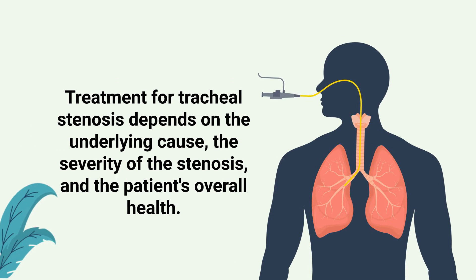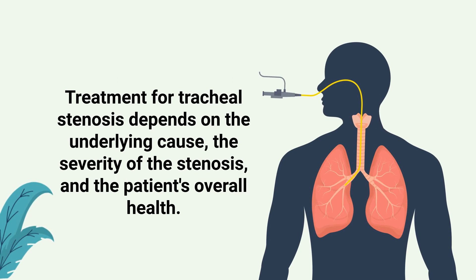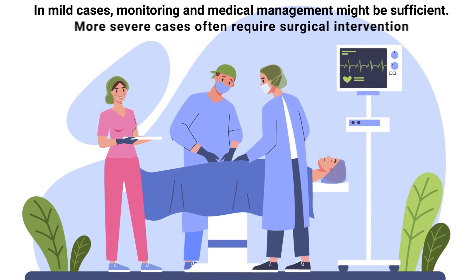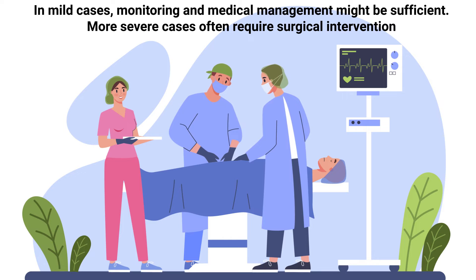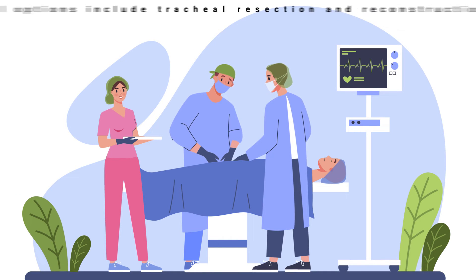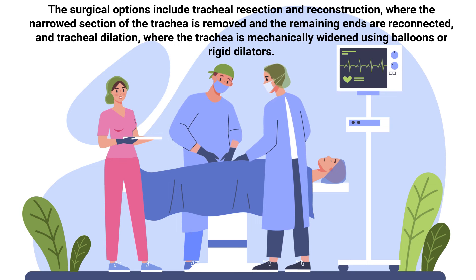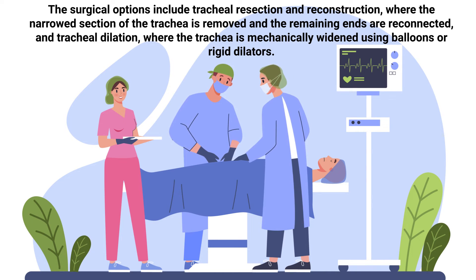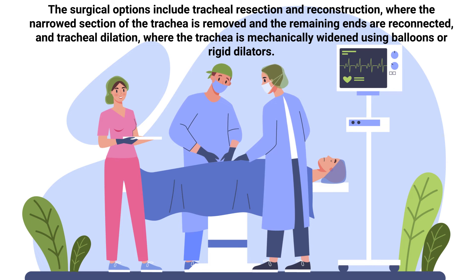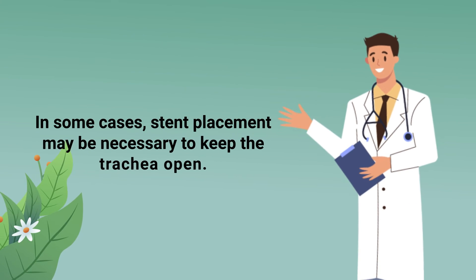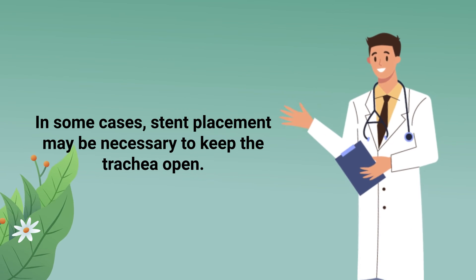Treatment for tracheal stenosis depends on the underlying cause, the severity of the stenosis, and the patient's overall health. In mild cases, monitoring and medical management might be sufficient, while more severe cases often require surgical intervention. Surgical options include tracheal resection and reconstruction, where the narrowed section is removed and the remaining ends are reconnected, and tracheal dilation, where the trachea is mechanically widened using balloons or rigid dilators. In some cases, stent placement may be necessary to keep the trachea open.